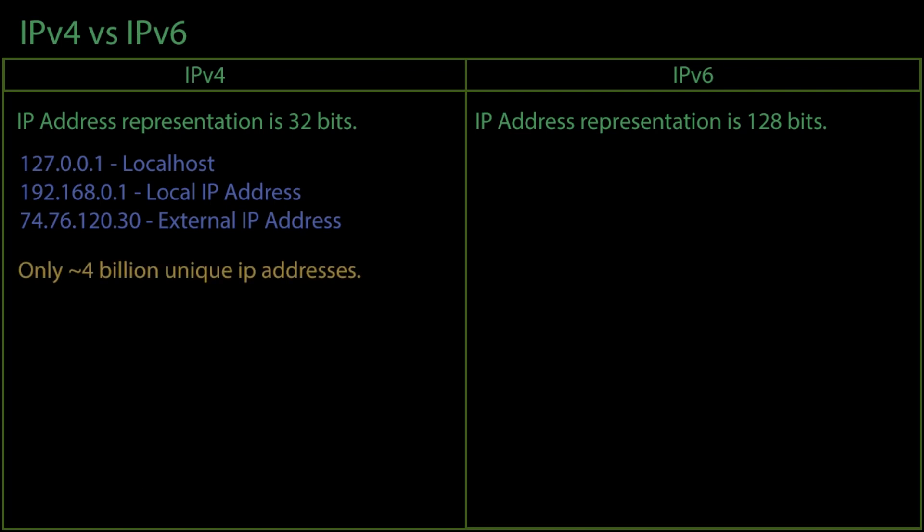The problem with version 4 is that by only using 32 bits, there is a maximum of around 4 billion possible unique IP addresses. There are more than 4 billion people in the world, so this becomes an issue. There are also many reserved IP addresses. For example, 127.0.0.1 is an IP address to represent the local host.